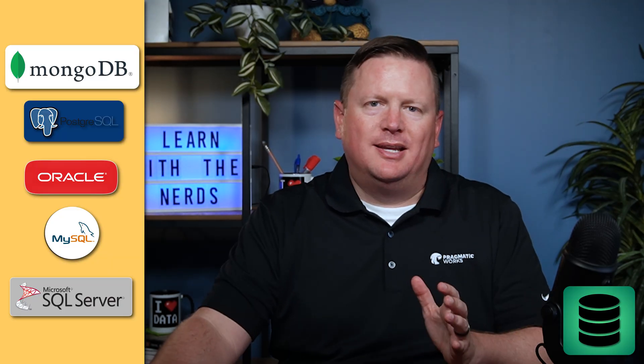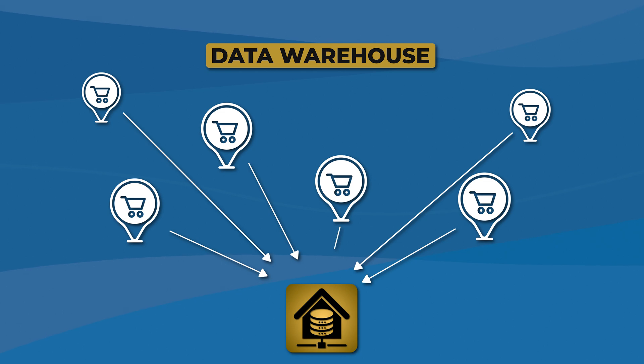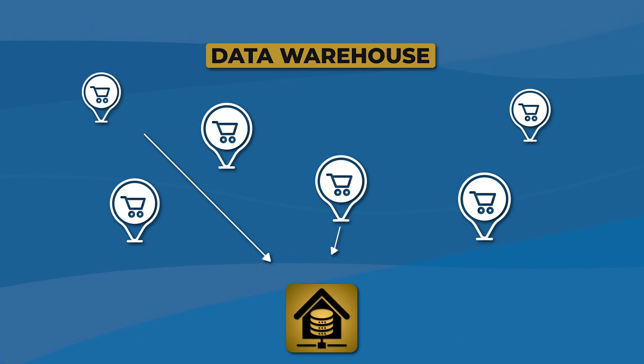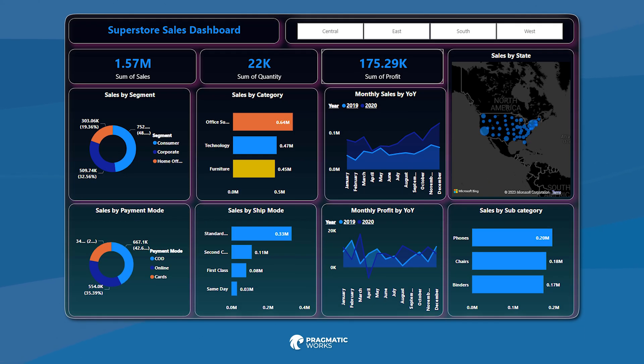Now that you know what a database is — and the database is traditionally going to be more for transactional use — let's talk about what a data warehouse is. Imagine you own a chain of grocery stores and you want to analyze sales trends over time, you want to build out reports and dashboards. A data warehouse is a specialized database designed for storing structured information from multiple sources, optimized for online analytical processing, or OLAP. A data warehouse is specifically designed for report development, with reports built using various tools like Microsoft Power BI sitting on top of the data found in a data warehouse.